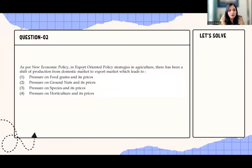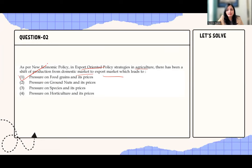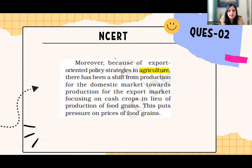As per the new economic policy, in export-oriented policy strategies in agriculture, there has been a shift of production from the domestic market to the export market. This leads to pressure on food grains and their prices. Specifically, the domestic market production shifts toward cash crops in lieu of food grains.